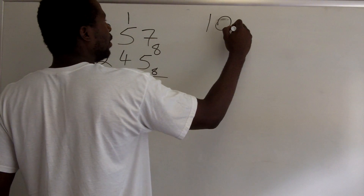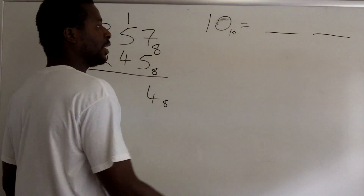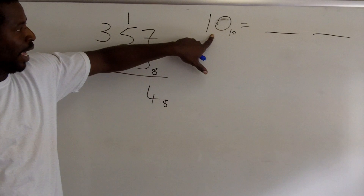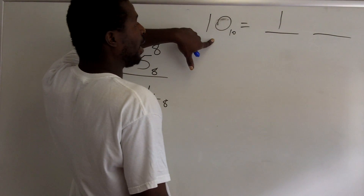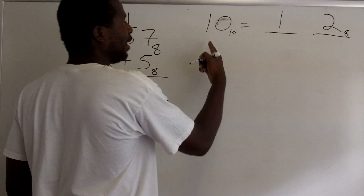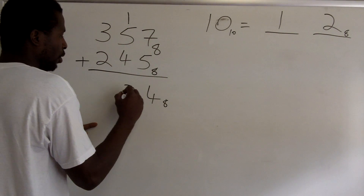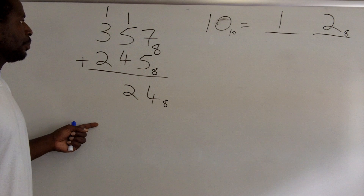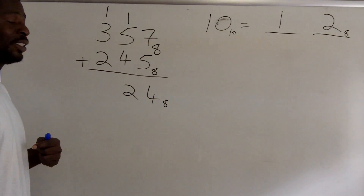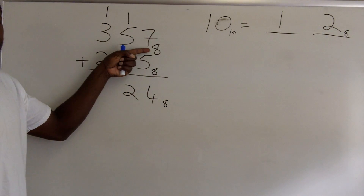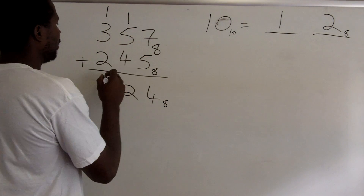I need to convert 10 base 10 to a base 8 number. I'll need an eights place and a ones place. How many groups of 8 are there in 10? There is one group of 8 in 10, and the remainder when you divide 10 by 8 is 2. So 10 base 10 is actually 12 base 8. I record the 2 and carry the 1.